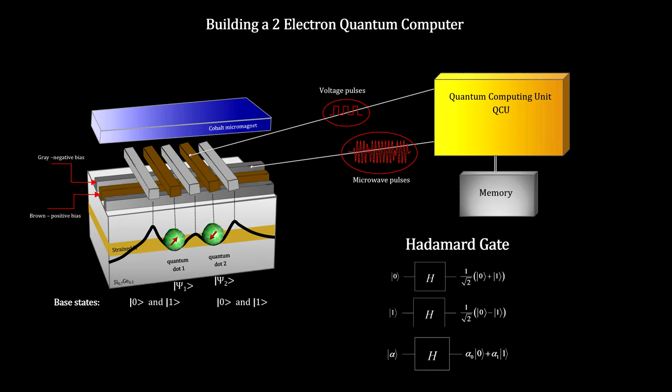The Hadamard gate is one of the most important operations. It takes a single qubit in a base state as input and outputs a qubit in a superposition state with equal coefficients.